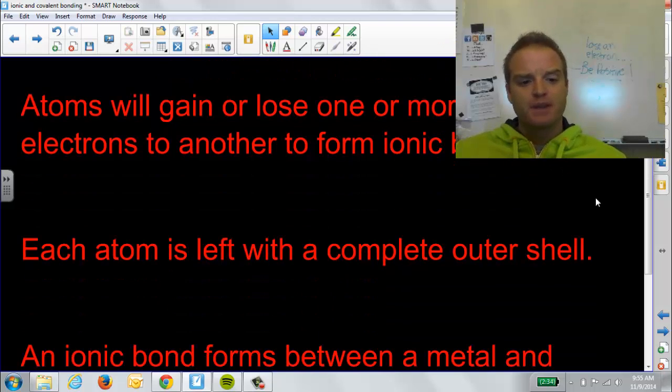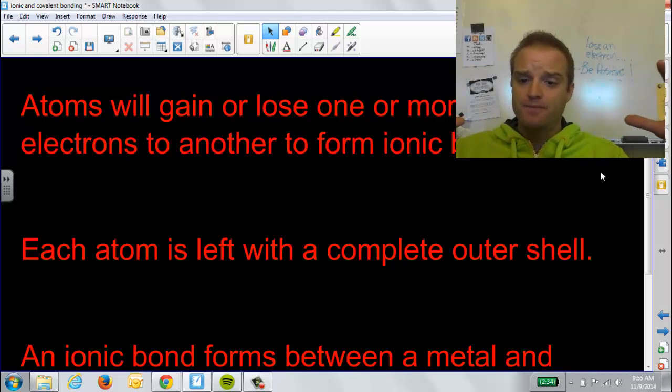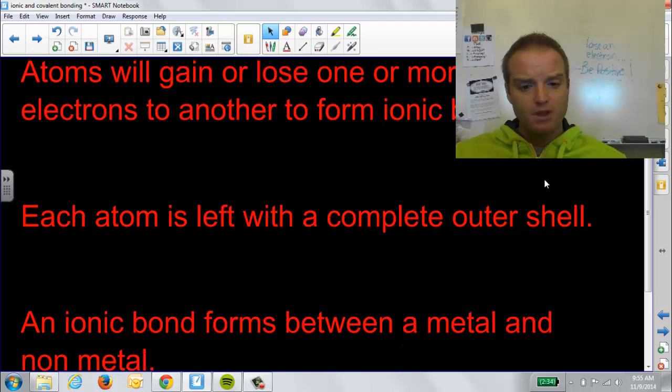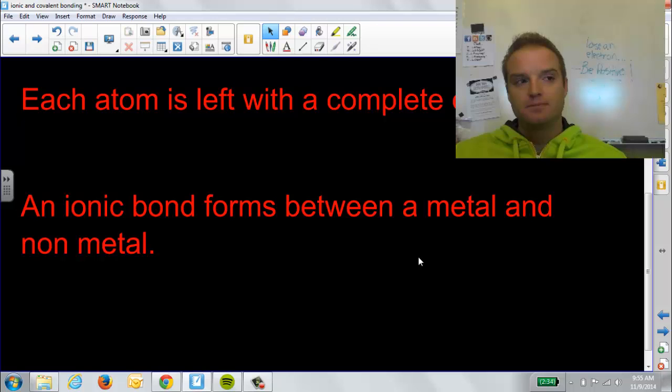So, the reason they do this is atoms want to have that outermost shell completely filled. The energy shells are either completely filled up to eight, or they want to empty, so they go down to their next full one. To do that, they give away, they gain or lose the electrons to get that shell happy. These ionic bonds tend to form between certain types of elements, between metals and non-metals. We'll look more closely at that here in the next few slides.